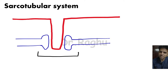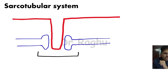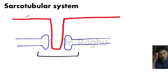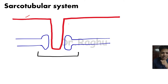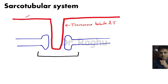The sarcotubular system is a combination of two things: one is the sarcoplasmic reticulum and another is tubules. What are these tubules? The sarcolemma invaginates deeper down into the muscle fiber, and this invaginated portion of the sarcolemma is called the transverse tubule, or simply T-tubule, because it is in the form of the alphabet T.